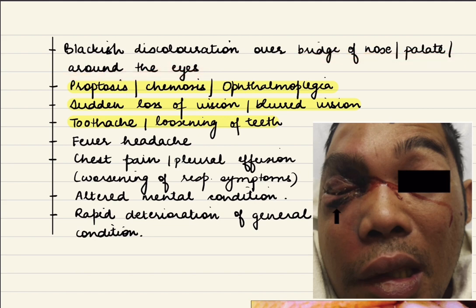There may be crusting or blackish discoloration in the nasal cavity and over the nasal bridge, palate, or around the eyes. Orbital symptoms include proptosis, chemosis, ophthalmoplegia, sudden loss of vision, or blurred vision. The patient can have pain in teeth or loosening of teeth, fever, headache, chest pain, pleural effusion, or worsening respiratory symptoms. If the disease spreads to the brain, altered mental status or rapid deterioration of general condition may occur.